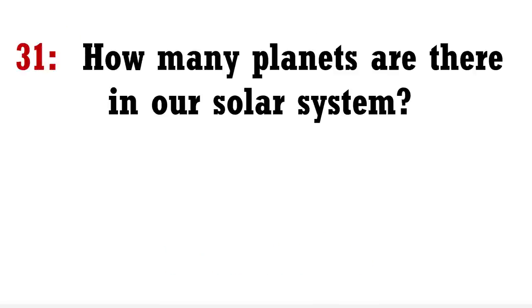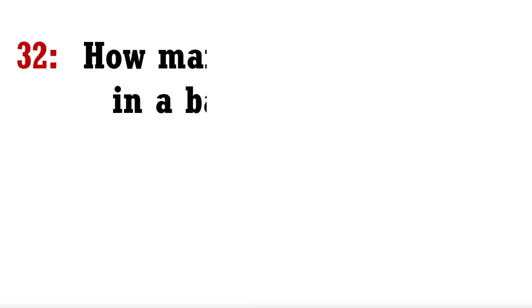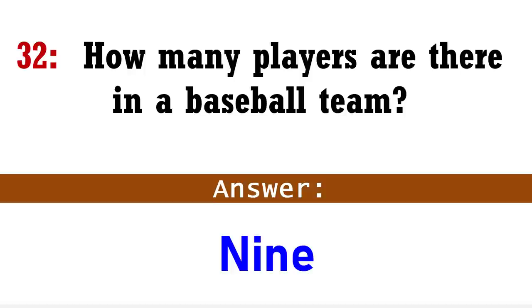How many planets are there in our solar system? Answer: Eight. How many players are there in a baseball team? Answer: Nine.